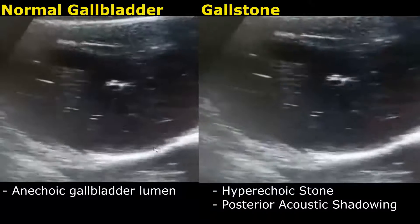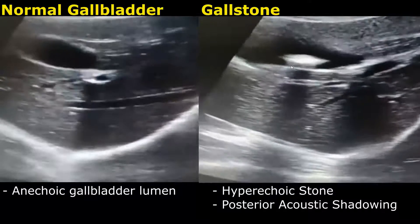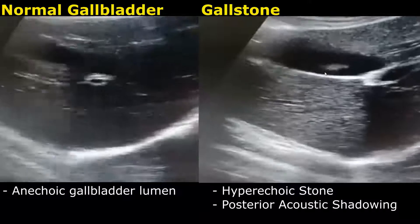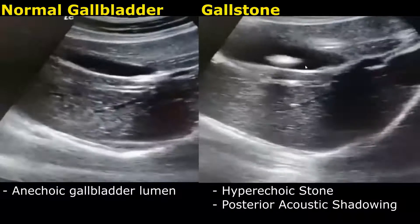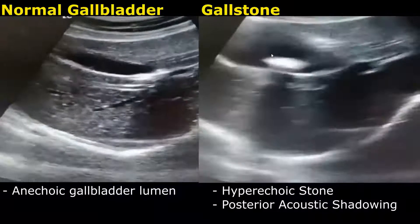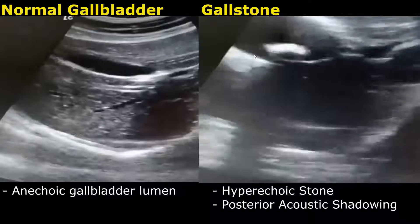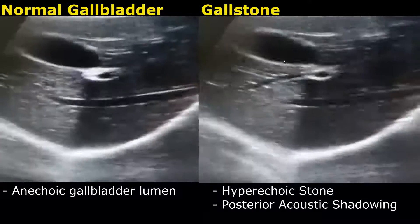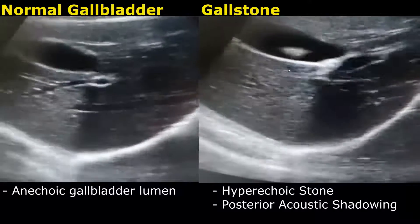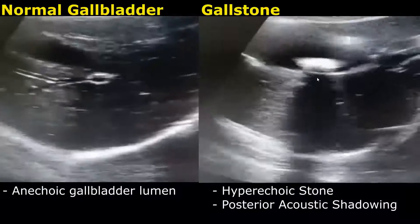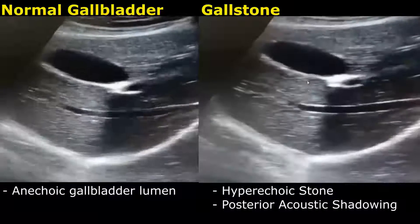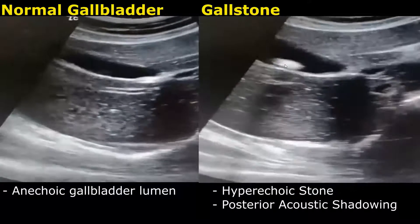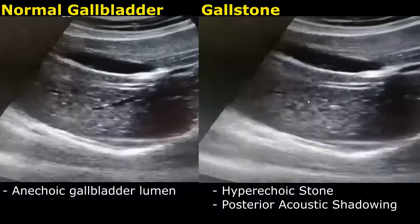In the image on the right, we see a hyperechoic gallstone within the anechoic lumen of the gallbladder. The gallstone is producing posterior acoustic shadowing. We can only see a single gallstone, and it is large enough to produce a large shadow.